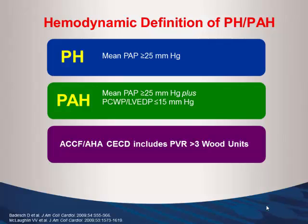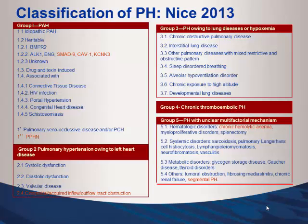The most important thing about this classification is that it's the system we use, and I'm pleased to see residents and fellows properly classifying patients into groups. When you use this classification, it implies treatment choices and prognosis. Every pulmonary hypertension program wants to see Group 1 patients — those are the ones treated with the specialized medicines. But in reality, we mostly see Groups 2 and 3.